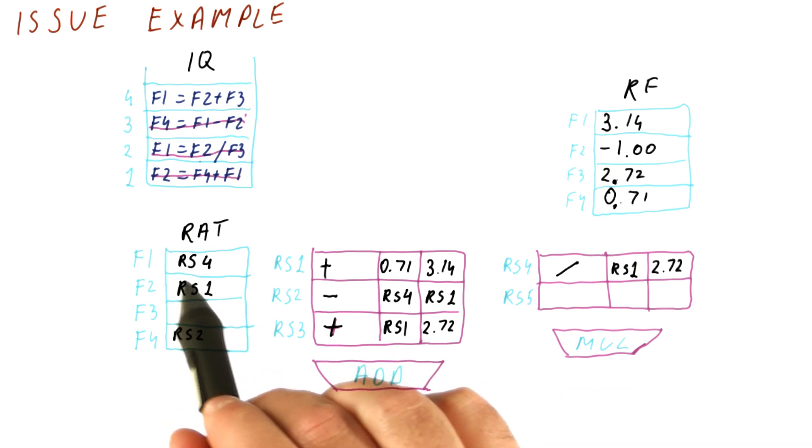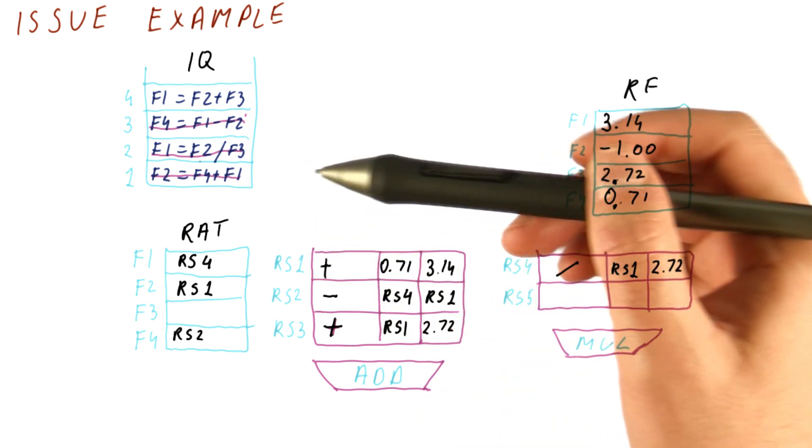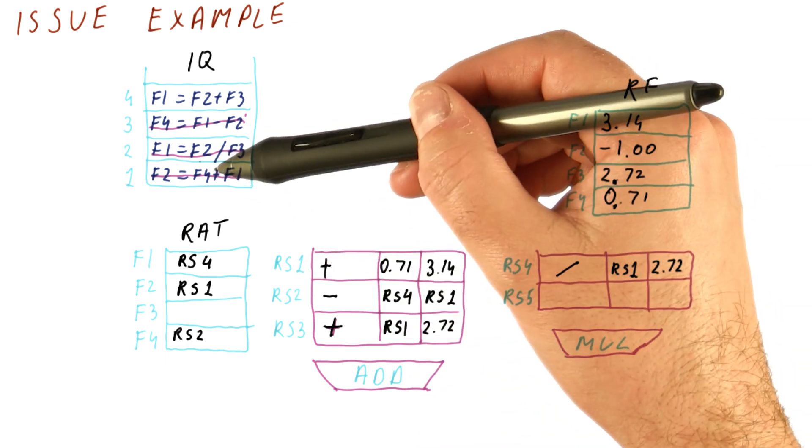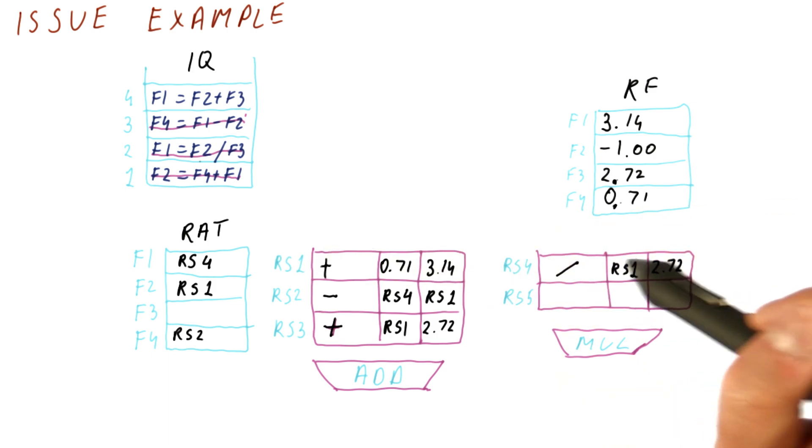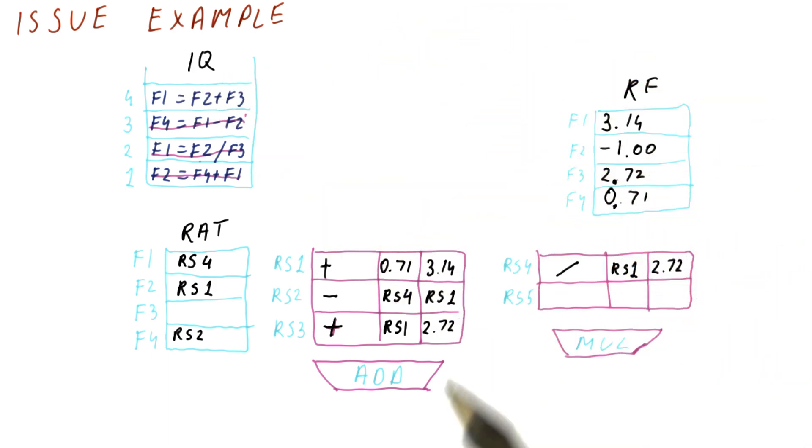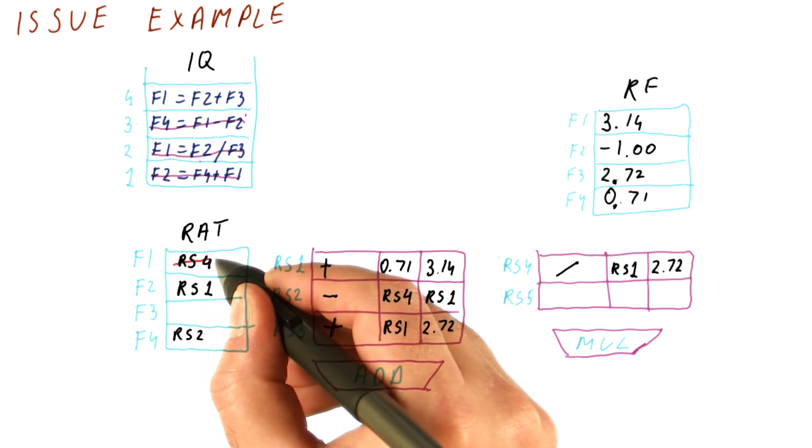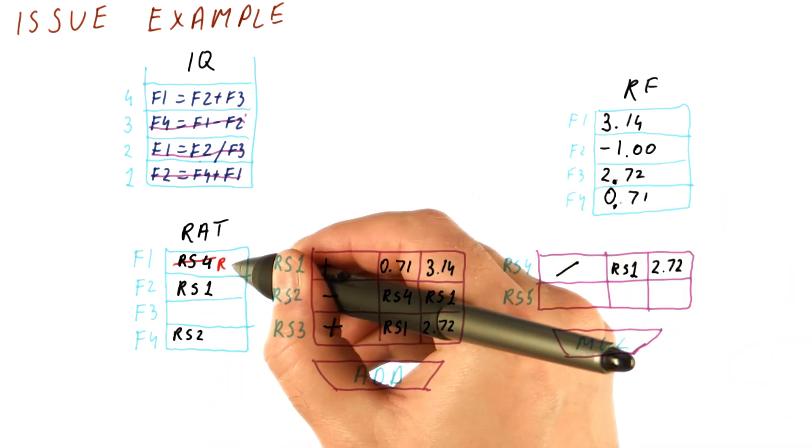We're going to then rename F1 to point to this result. And now we see that F1 is already renamed to reservation station 4. That's basically, if you want to use F1 since this instruction, you would be waiting for its result. But now, F1 is being basically renamed to another reservation station. So this is how register renaming works in Tomasulo's algorithm. So what we're going to do is we're going to basically override this with the name of this reservation station, which is RS3.